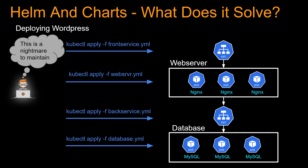This is super painful because every time you change something you have to go and change multiple files, manage them together, and make sure dependent parts are deployed in sync. It's all over the place — maintaining this is a nightmare. You could merge all four YAML files into one, but that's not really elegant either.